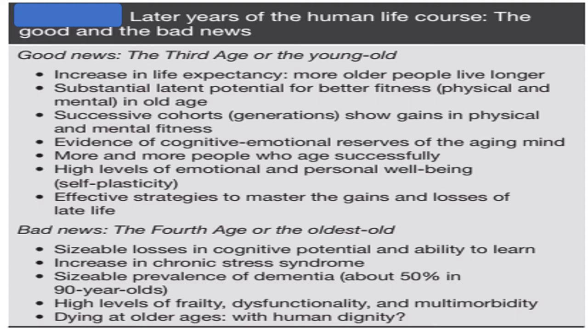Regarding the later years of the human life course, the good news is that the third age — the young old — shows increases in life expectancy, gains in physical and mental fitness, evidence of cognitive and emotional reserves, and more people aging successfully with high levels of well-being. The bad news is the fourth age — the oldest old — shows sizable losses in cognitive potential, increased chronic stress, prevalence of dementia at about 50 percent in 90-year-olds, high levels of frailty, dysfunctionality, multi-morbidity, and dying at older ages with human dignity.